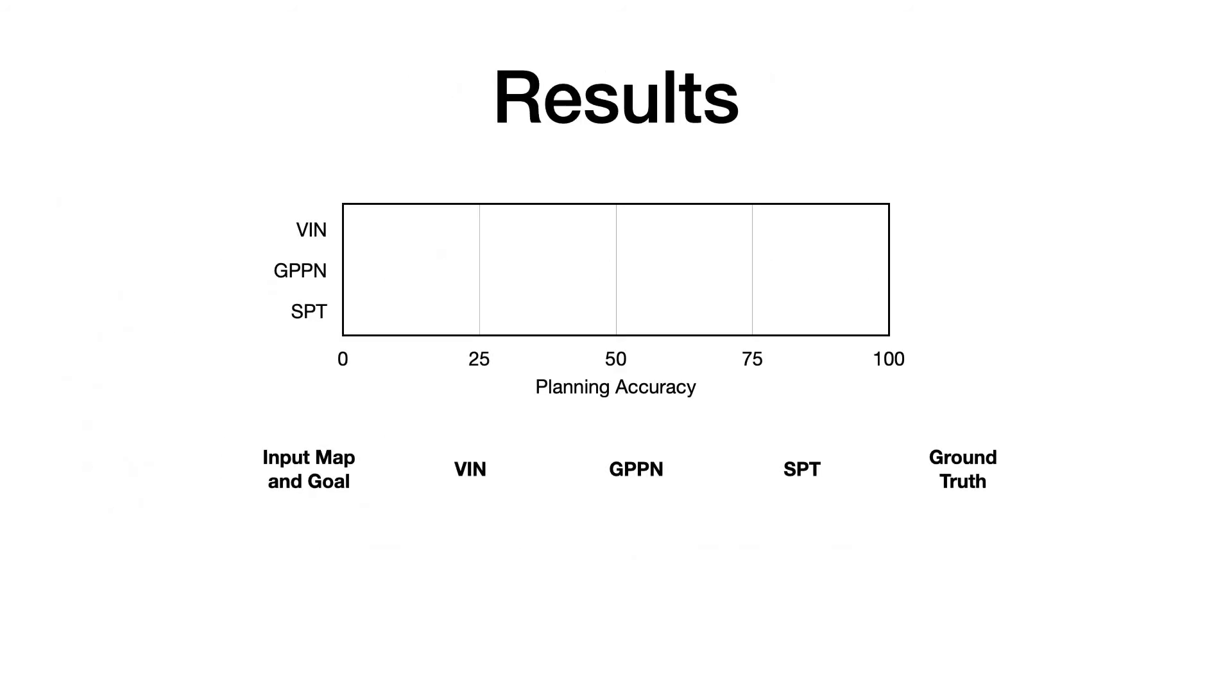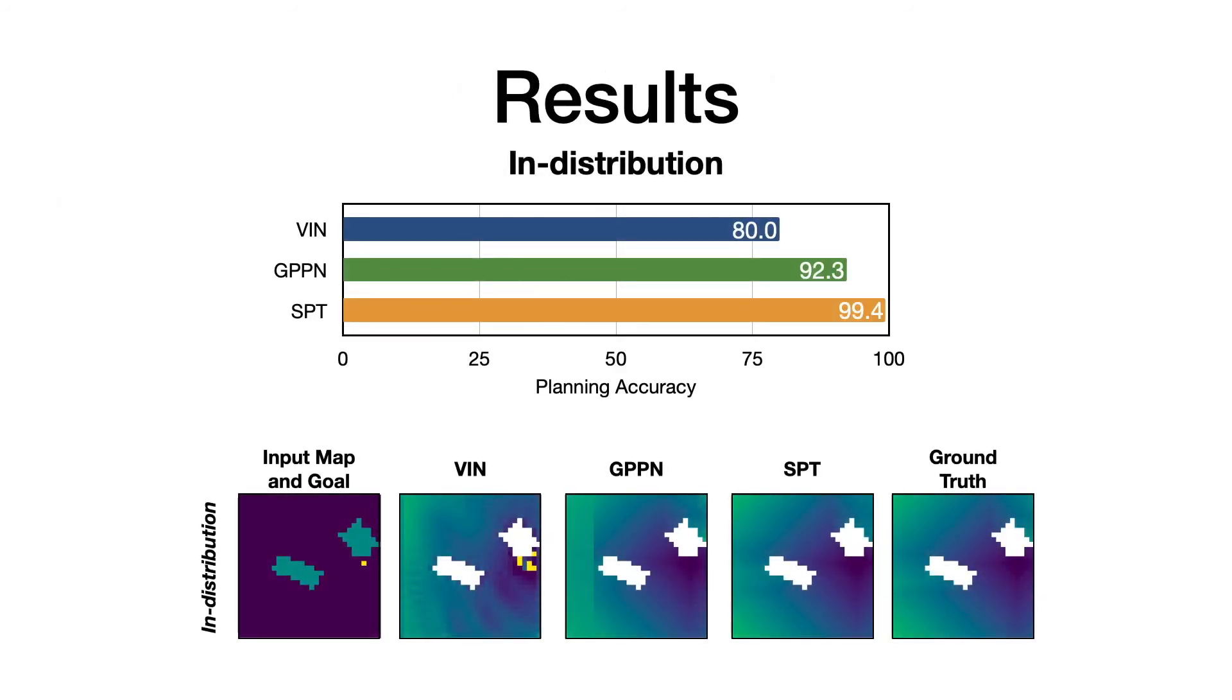We first conduct experiments in known maps. Among in-distribution test sets, the proposed SPT model outperforms both the baselines at both navigation and manipulation across different map sizes, achieving an overall accuracy of 99% as compared to 92% for the best baseline. We show an example of the predictions of the SPT model as compared to the baselines for the navigation task.